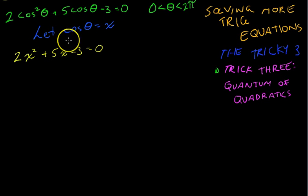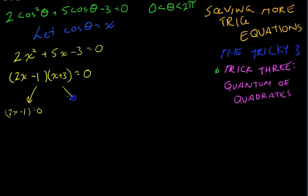Now from here, you can solve this however you see fit. I'm going to go a bit old school here and factorize it. Let's see if I can figure that one. So here's our factorized quadratic: 2x minus 1 times x plus 3 equals 0. So that means that either 2x minus 1 equals 0, or x plus 3 equals 0.